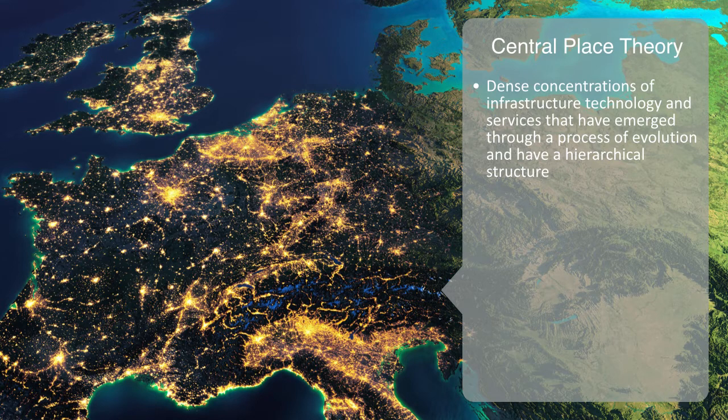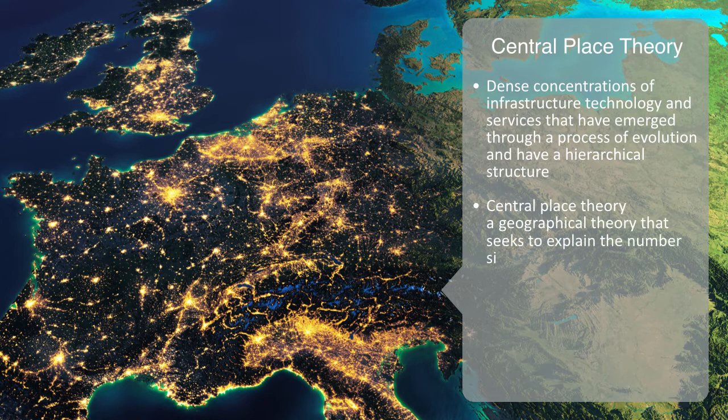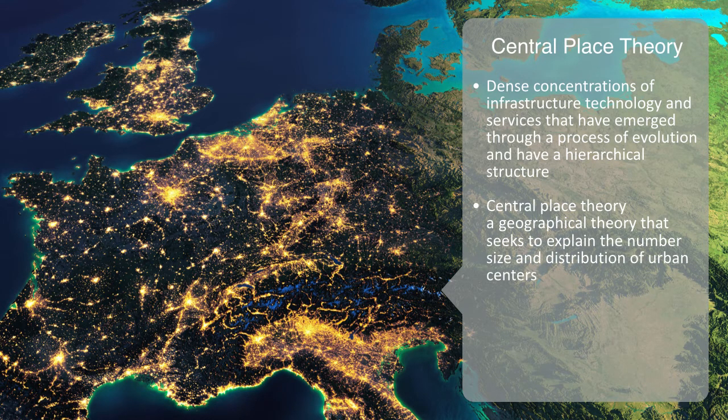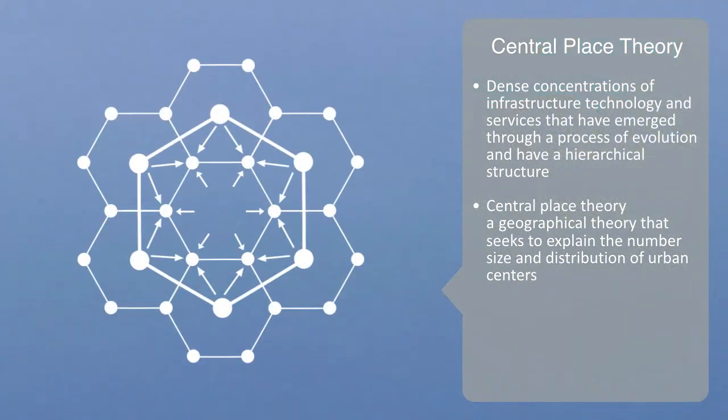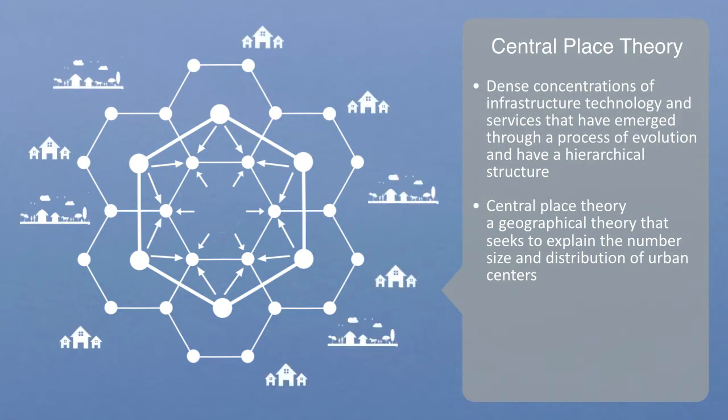This hierarchy is described in the central place theory. A geographical theory that seeks to explain the number, size, and distribution of urban centers. It describes how certain differentiated services emerge at a certain threshold to scale. A village can provide some set of basic services. With a collection of villages, we can get the emergence of a town that will provide certain differentiated services in its functioning as a regional hub.